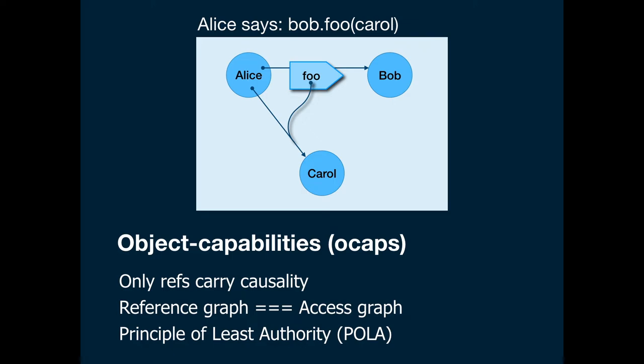This is all familiar for memory-safe object languages. What brings us to object capabilities is when this is the only way an object can cause effects on the world outside of itself. In that case, the reference graph familiar from the programming language literature becomes identical to the access graph from the access control literature. It gives us a very natural way to express the principle of least authority, in which an object is only given that permission that it needs to do its legitimate job.